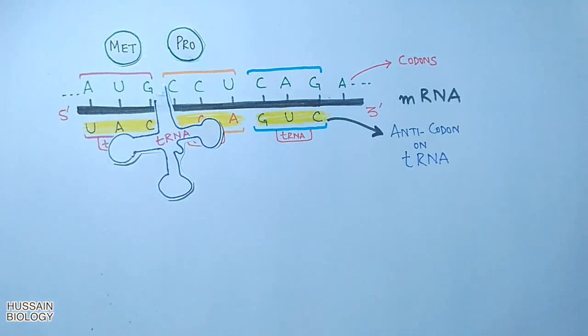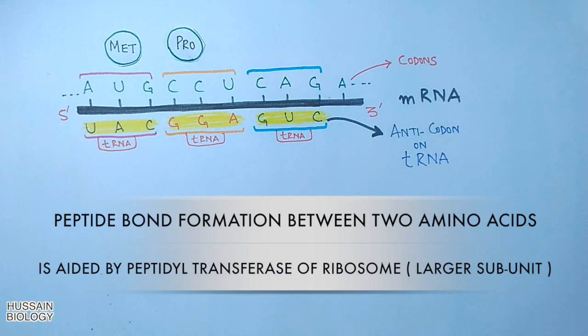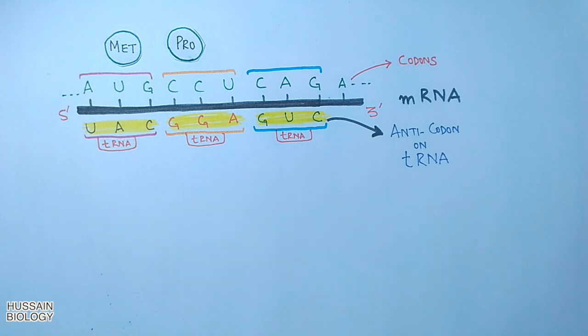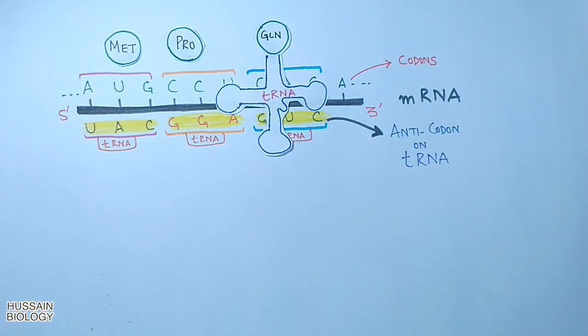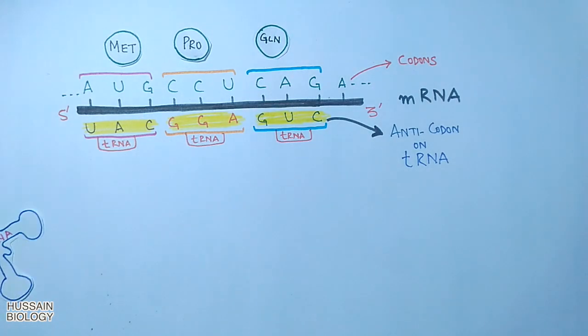The second charged tRNA comes in and gives off its amino acid according to the codon present, which is proline here. Finally, for CAG codon, the charged tRNA comes in and elongates the chain with another amino acid, and in that case we have glutamine. So this is the general mechanism of translation.